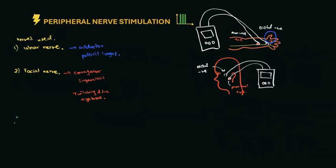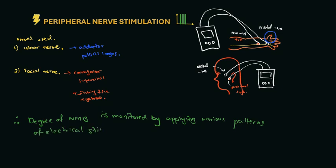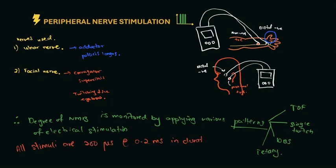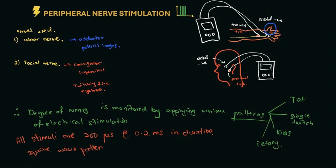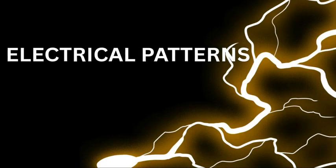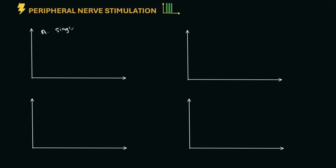Therefore, when we want to monitor the level of neuromuscular blockade, it is monitored by applying various patterns of electrical stimulation, whether there is train of four, single twitch, double burst stimulation, or tetany, and then monitoring how it looks in the graph. All stimuli are 200 microseconds or 0.2 millisecond in duration, square wave pattern, and all of equal current intensity.